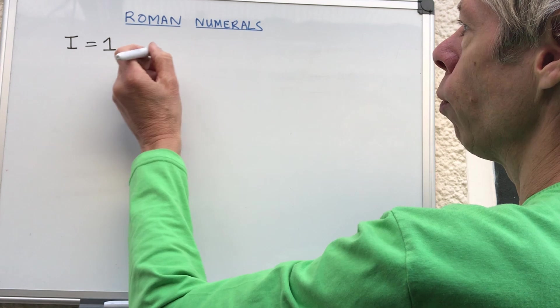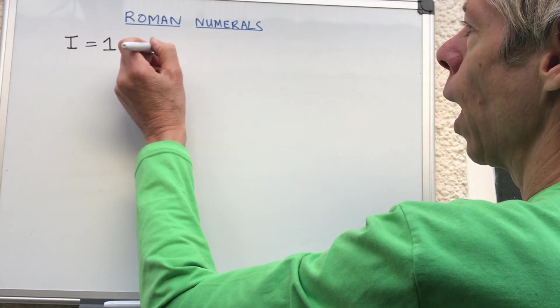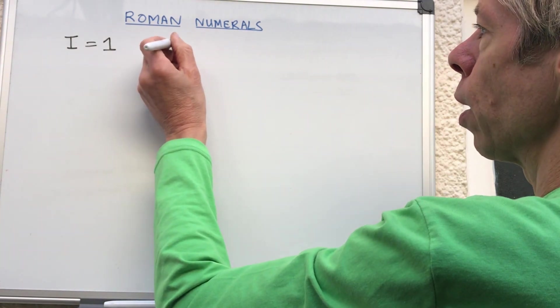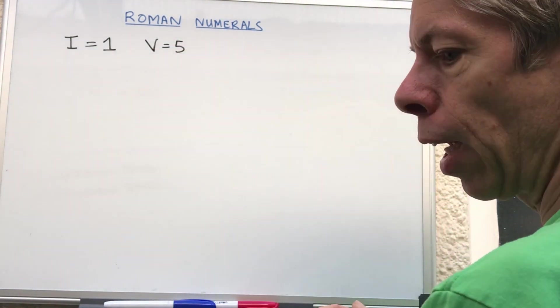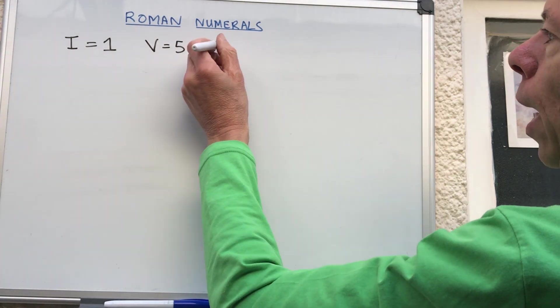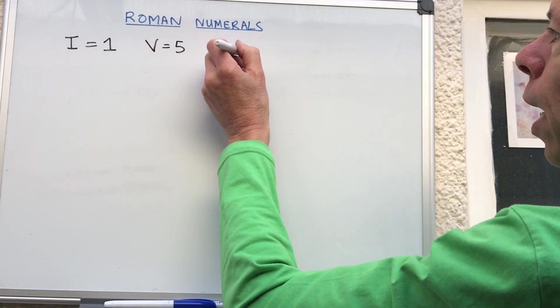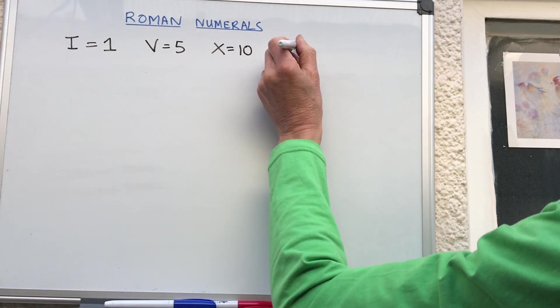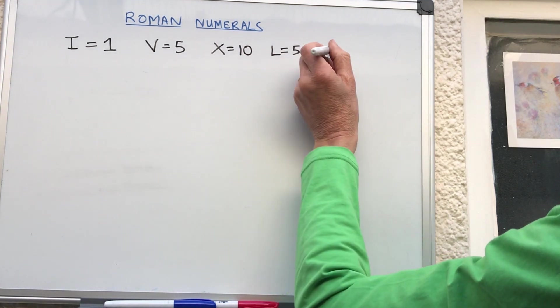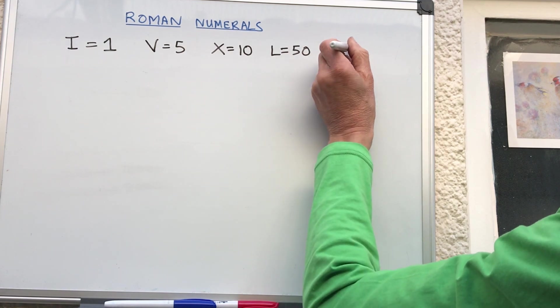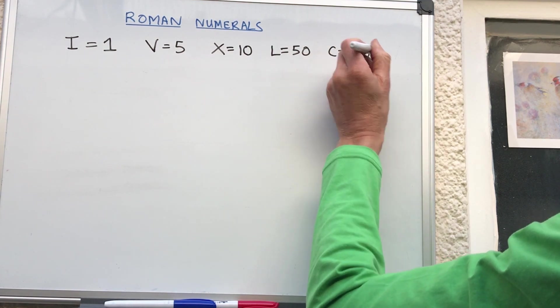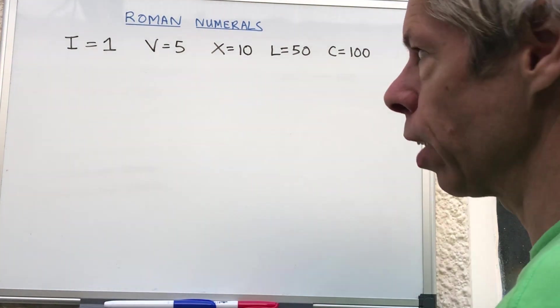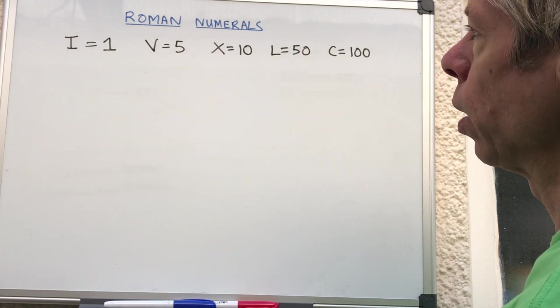We've got I for one, then we have the next symbol V which is five, next symbol we need is X which is 10, then we need L which is 50, and C which is 100. We're just going to be looking at numbers probably between about 1 and 200.